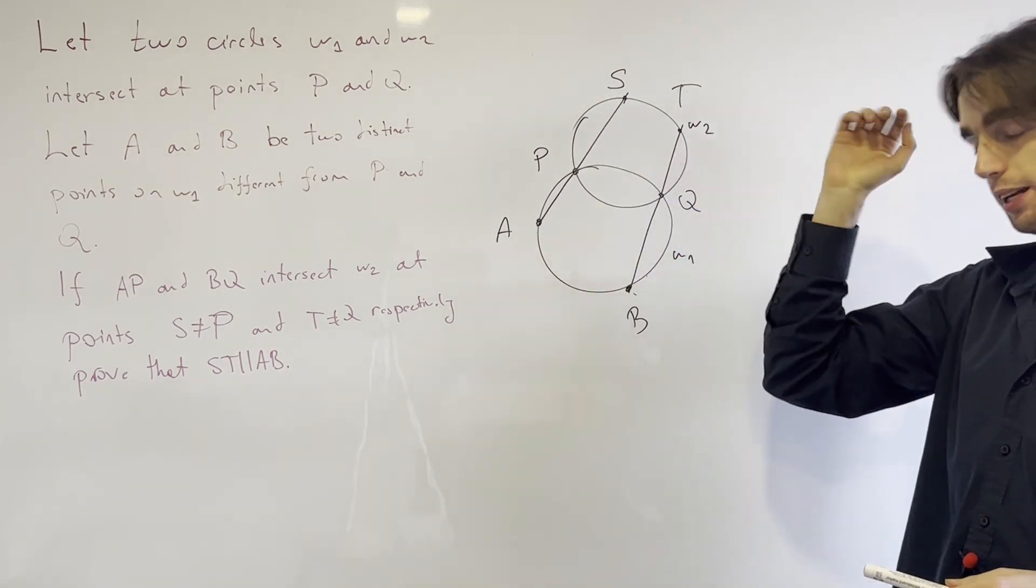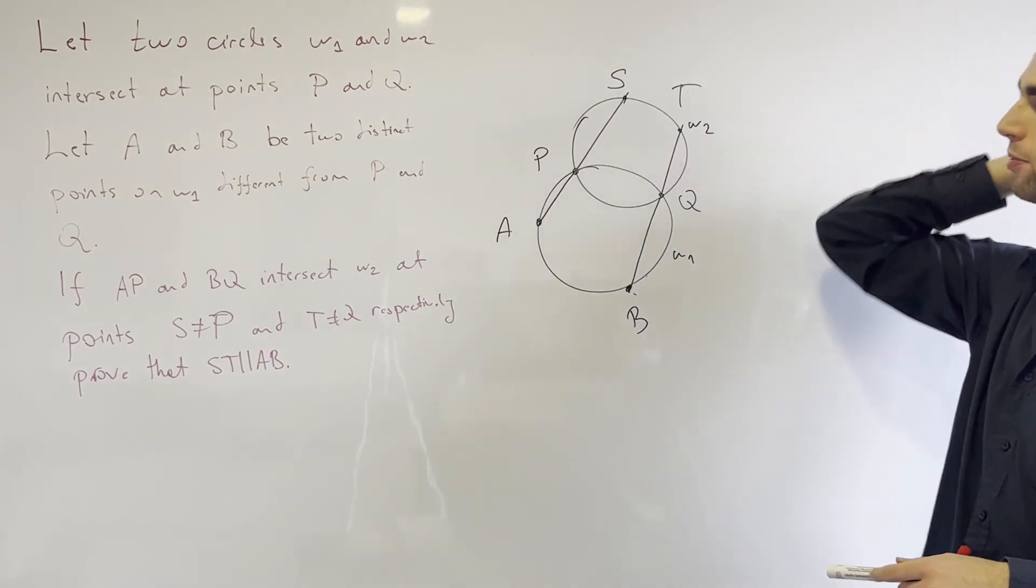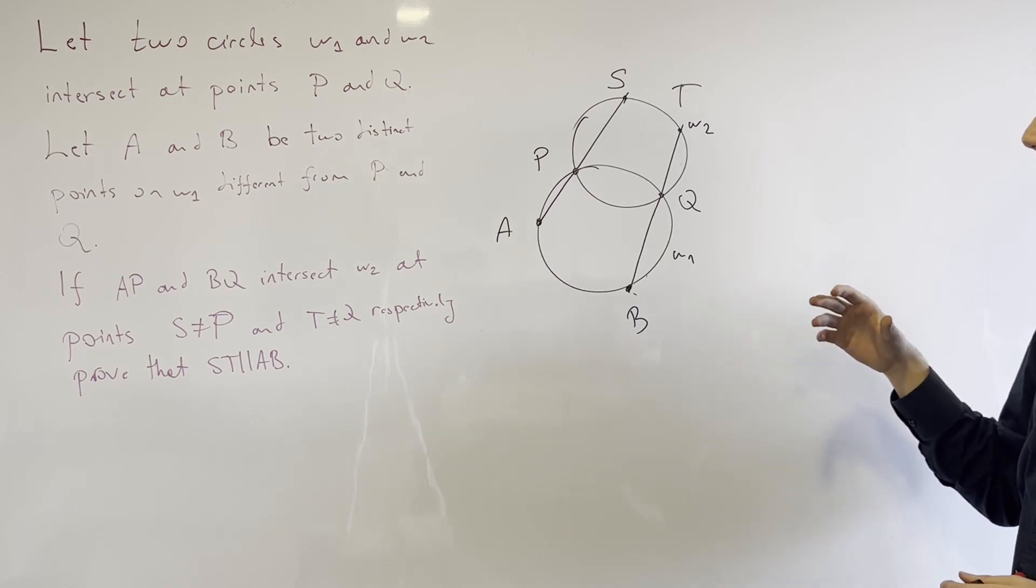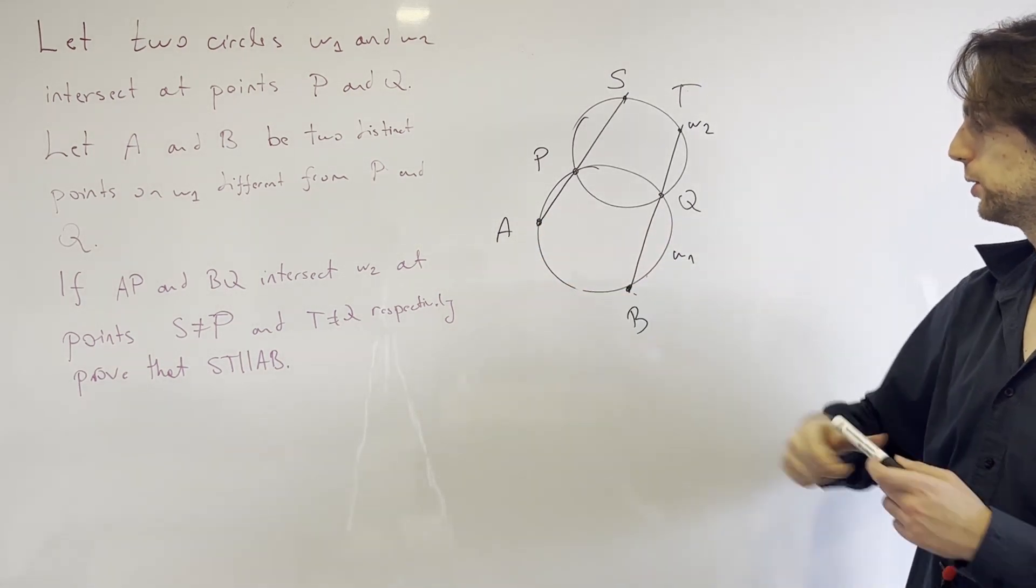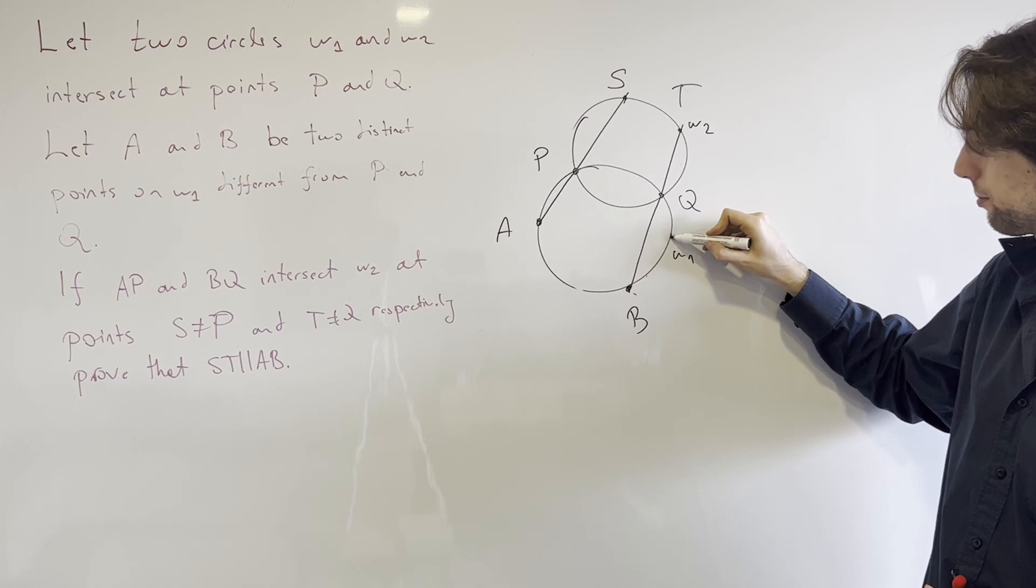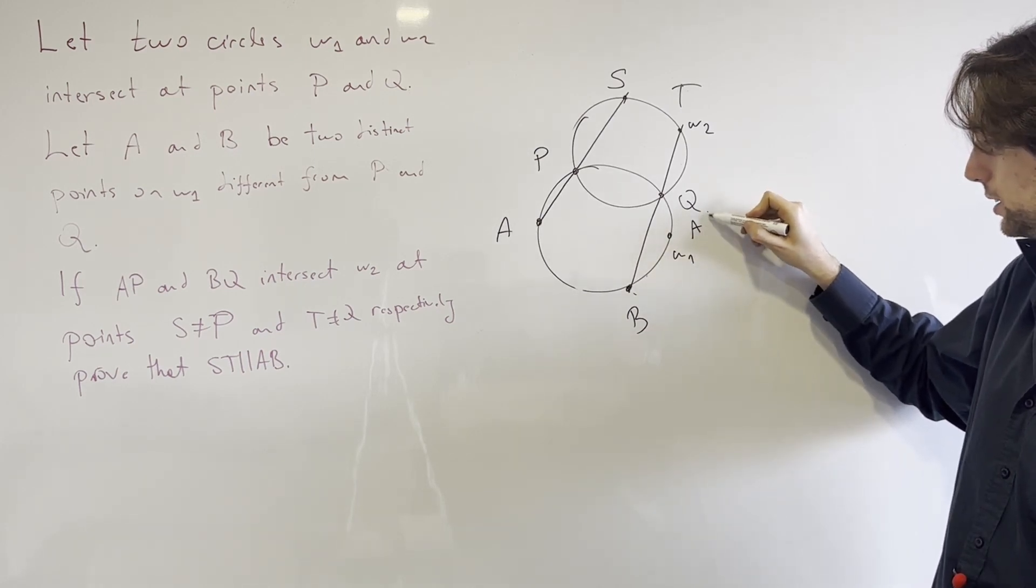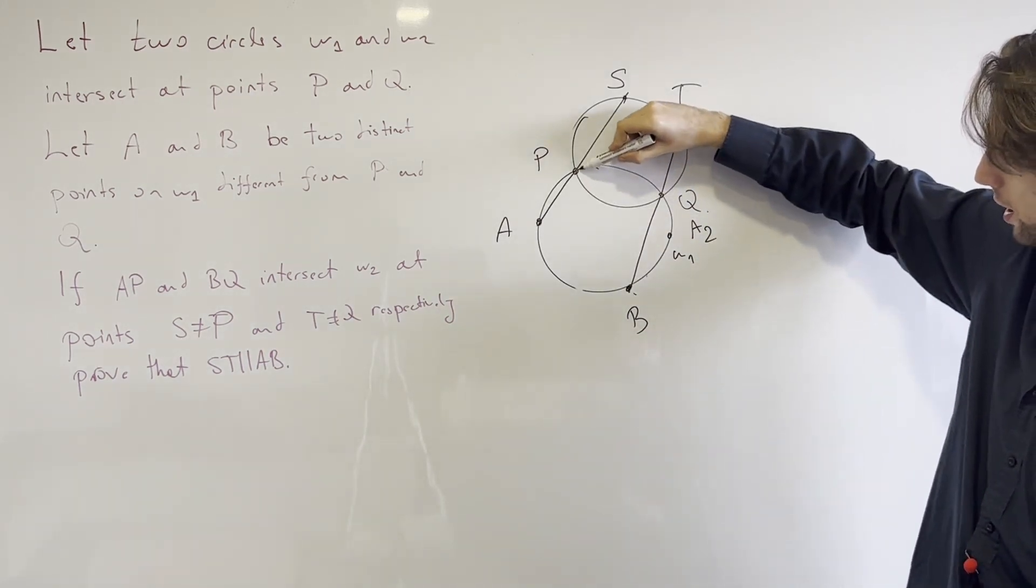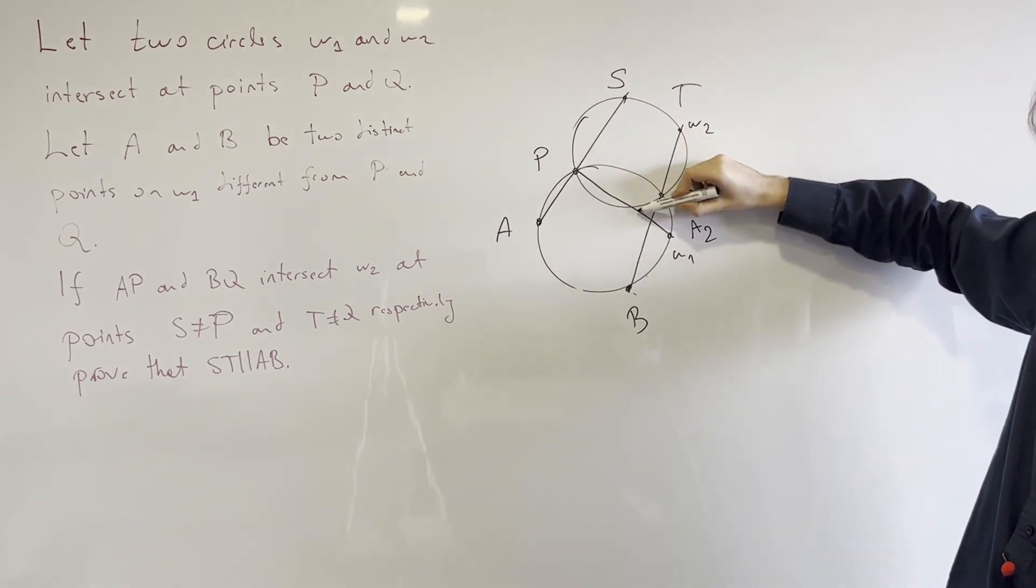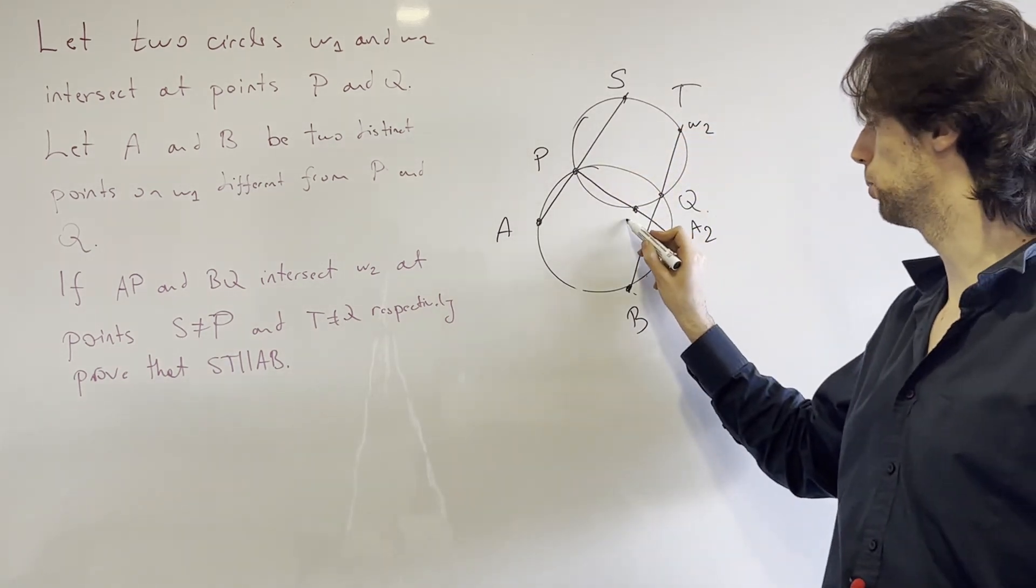This is one of the many possible configurations. We could also have them intersect, say maybe we could have B over here. Let's say this is A2 and then we might have a situation like this with this point S2.